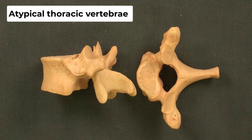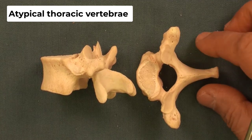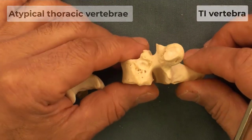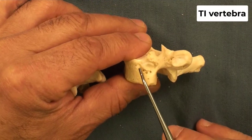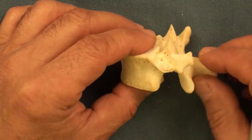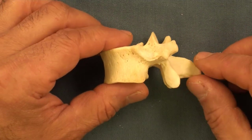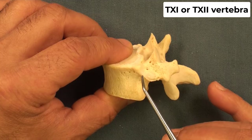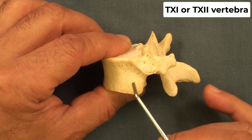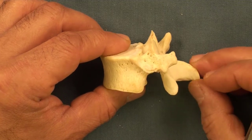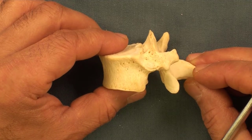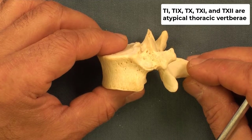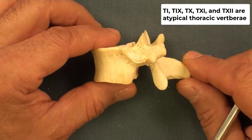The features we see on the typical thoracic vertebra are not present in all thoracic vertebrae. For example, T1 has a full facet on the side of the body, and T12 or T11 also has a full facet on the side of the body — even on the pedicle, not on the body. So T1, T9, T11, and T12 are atypical thoracic vertebrae.